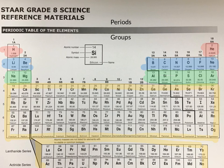You are less likely to encounter atoms that fall in periods 4 through 7 at the bottom of the periodic table. Those atoms range from potassium, number 19, to number 118, oganesson.